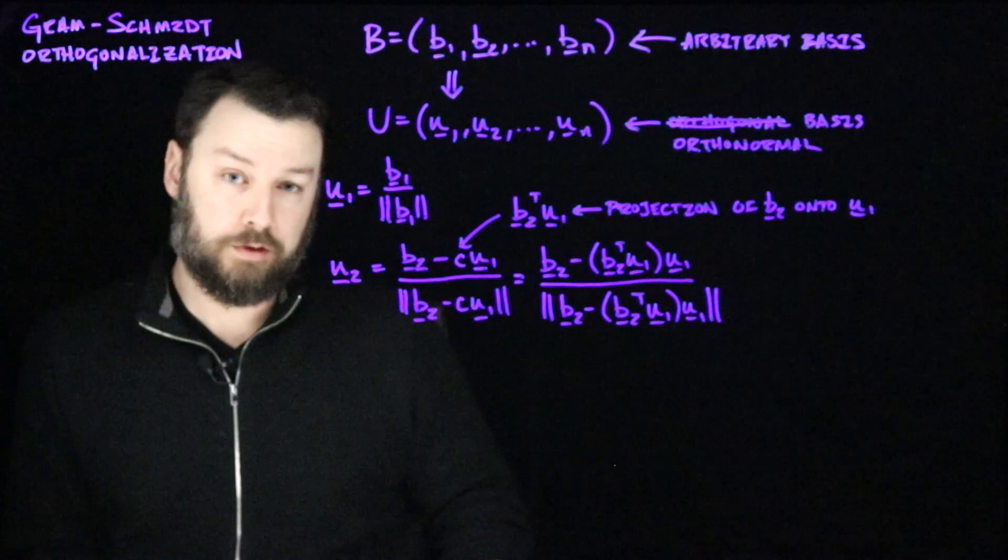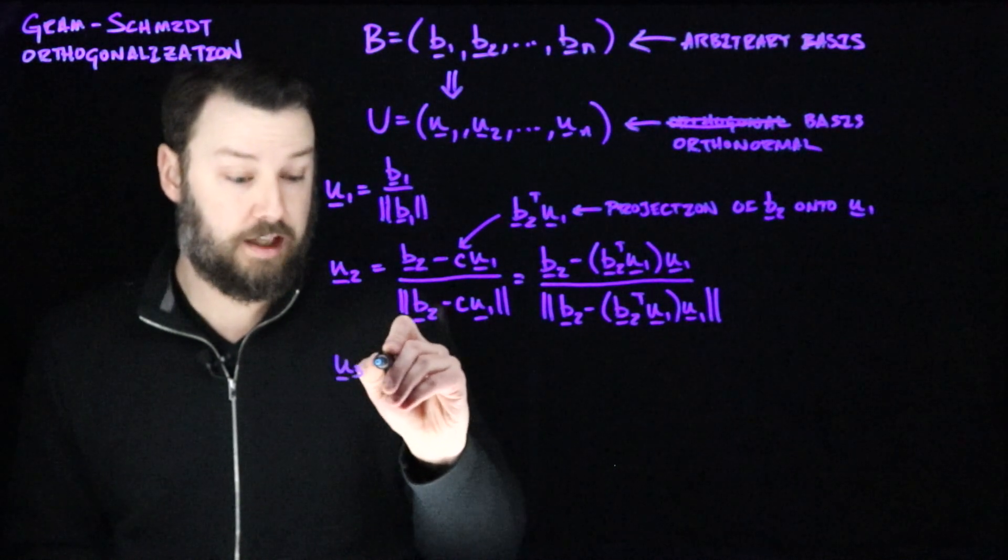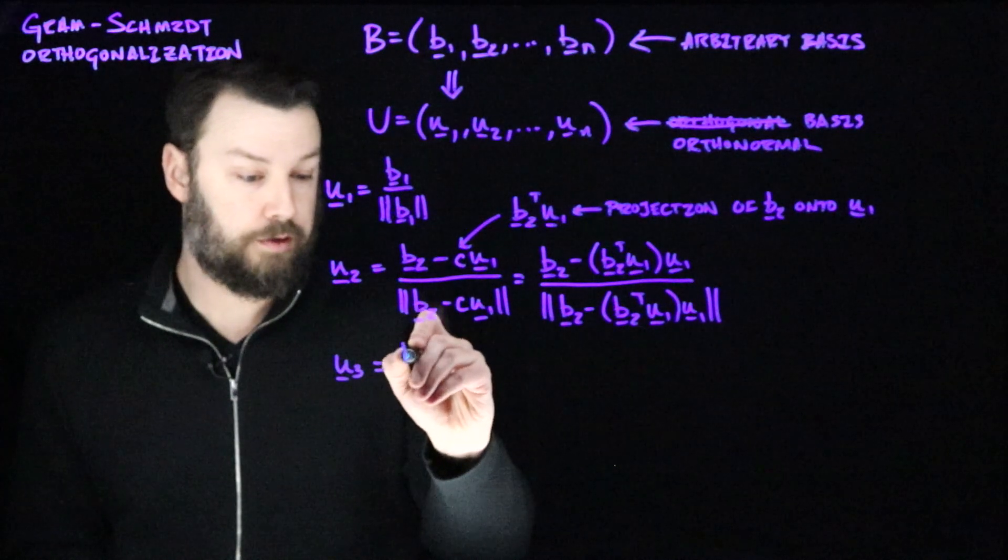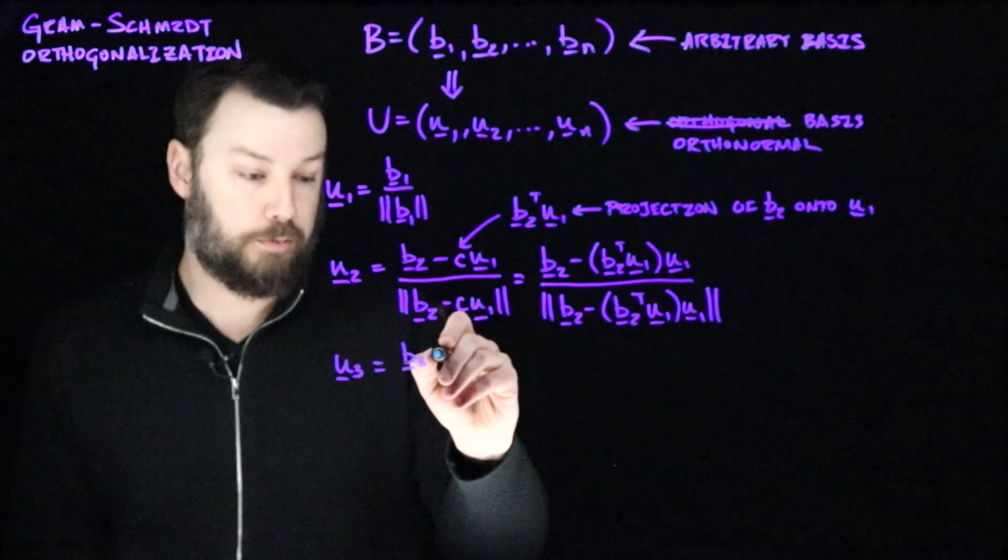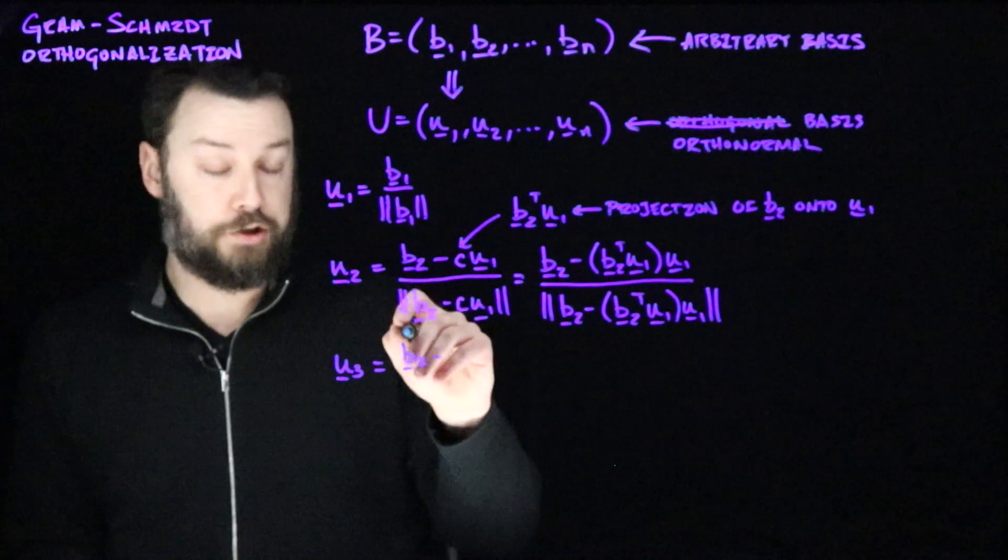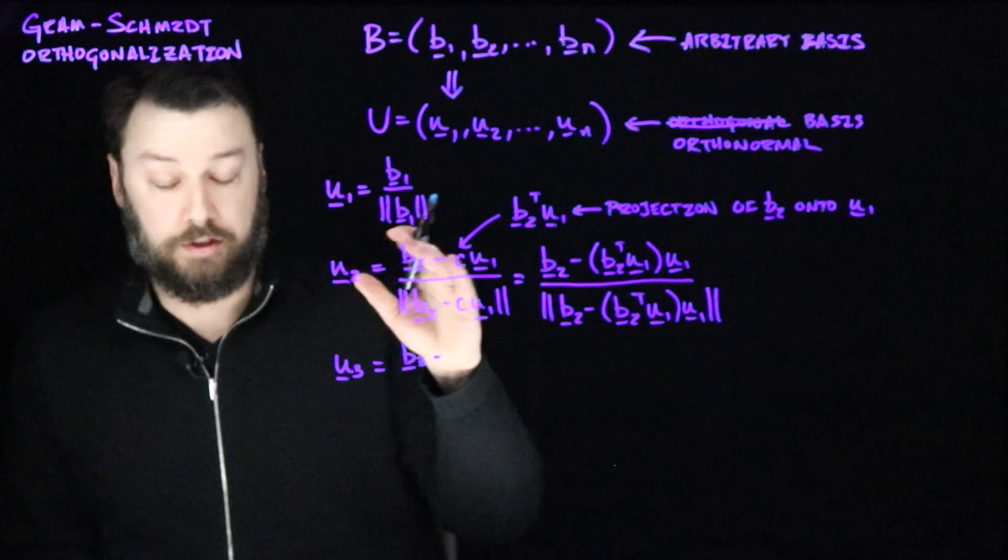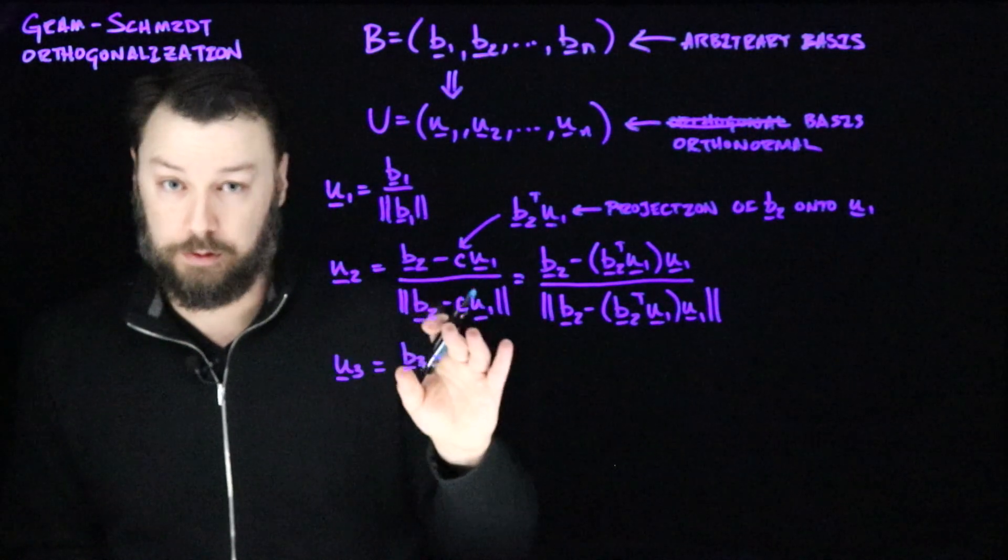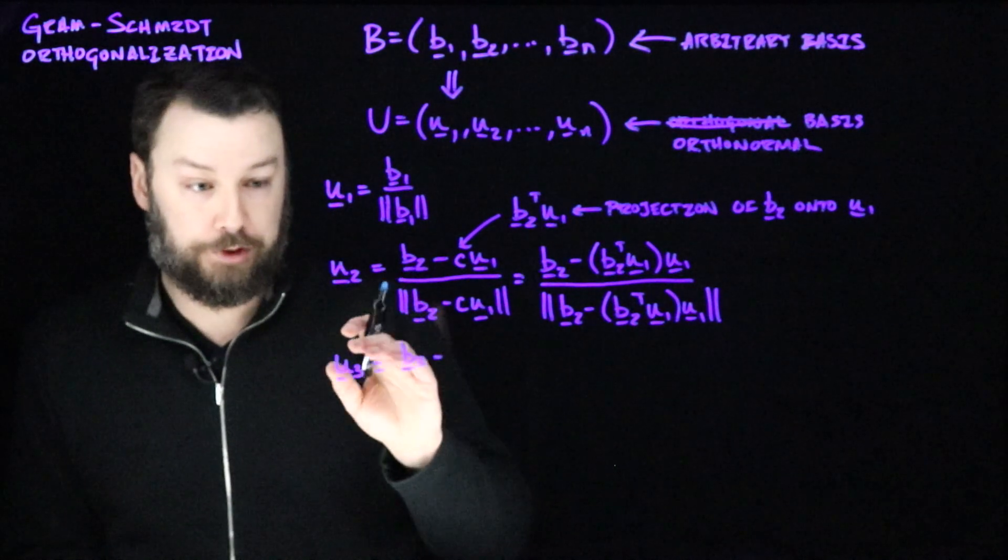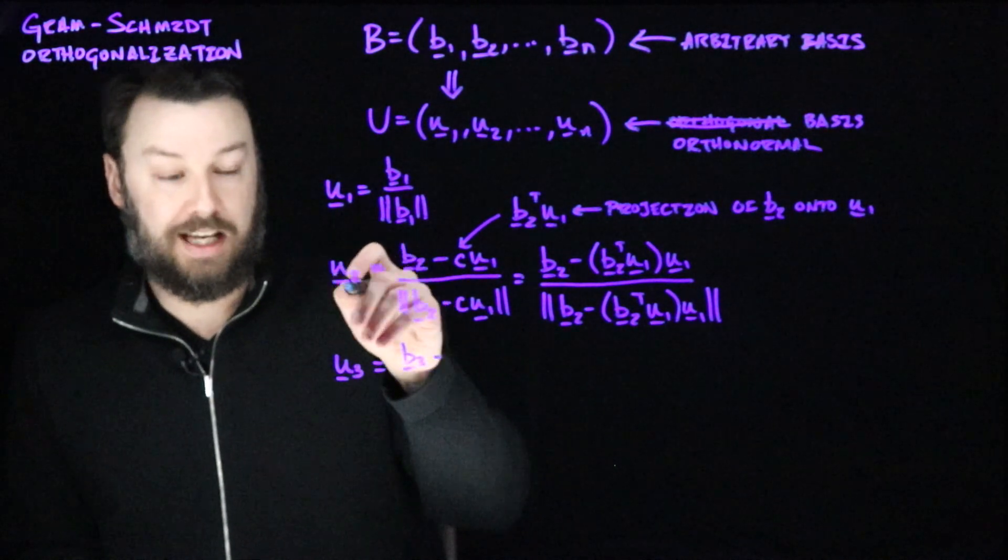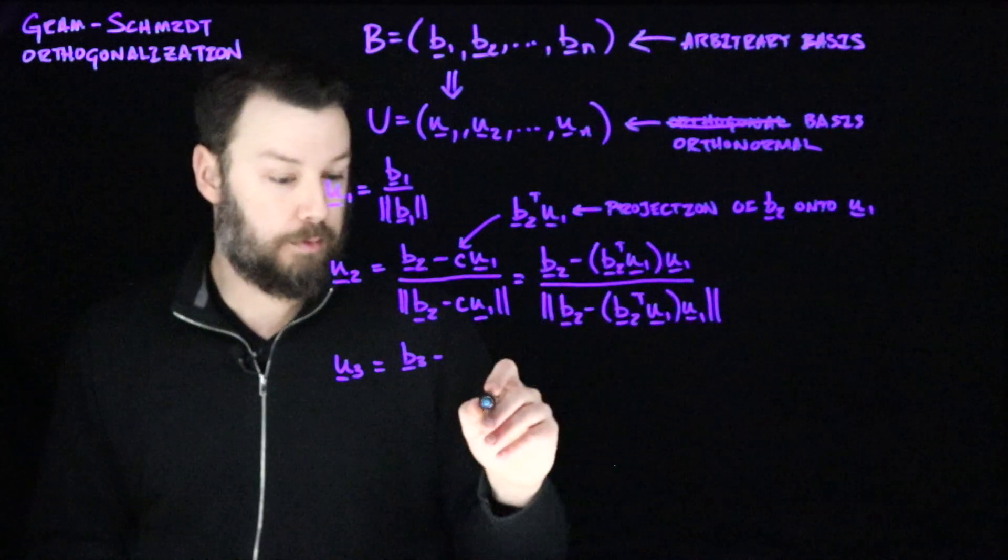So now let's think about u3. u3 is going to be the same idea where we're going to start with now b3, this third vector, but we're going to subtract from it the projection of b3 onto u2 and the projection of b3 onto u1 to make sure that we're perpendicular to both of those vectors. So we don't want anything to appear in u3 that aligns in some way with u1 or u2. We'll do that using the same setup that we did here.